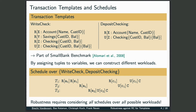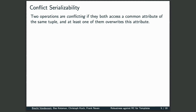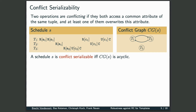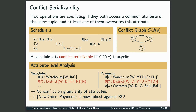For the robustness analysis, it is of course important to consider all possible schedules over all possible workloads that can be derived from these templates. In our definition of conflicting operations, we take into account the attributes that are accessed. Two operations are conflicting if they both access a common attribute of the same tuple, and at least one of them overrides this attribute. Reconsidering the schedule from the previous slide, the two highlighted operations are conflicting, and therefore lead to a dependency from T1 to T2 in the corresponding conflict graph. It is well known that a schedule is conflict-serializable if and only if the conflict graph is acyclic.